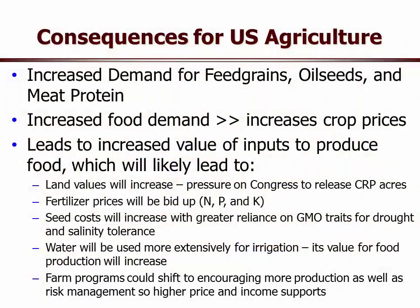We're going to see fairly high prices for nitrogen, phosphorus, and potassium — even with cheaper energy, we'll still bid up the price of nitrogen. Seed costs are going to increase because there's going to be greater reliance on GMOs to give us drought tolerance and salinity tolerance — those are the two things we really need. Water will be more extensively used for irrigation; its value for producing food is going to go up. Farm programs are likely going to shift to encourage farmers to produce more, possibly returning to high price and income supports like we had in the 1960s.